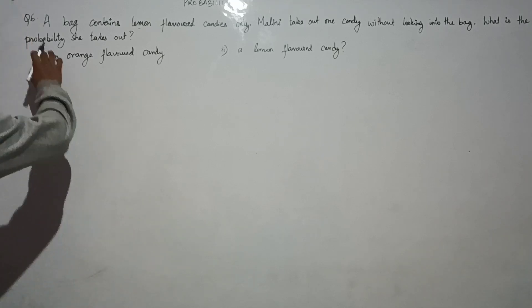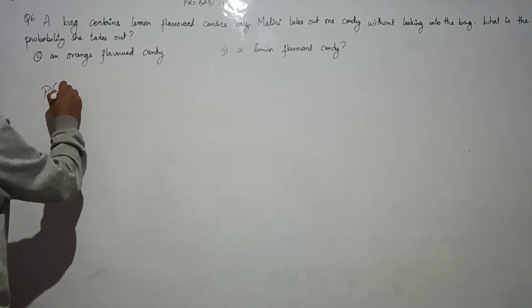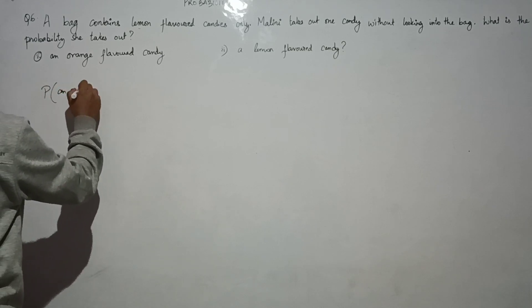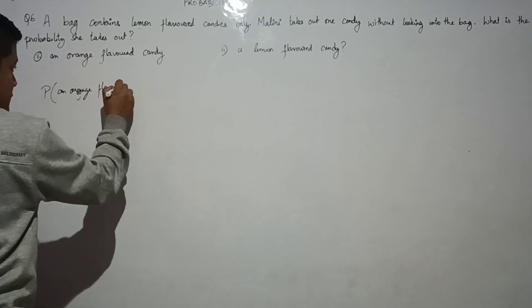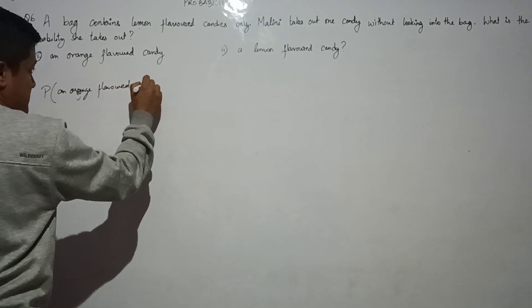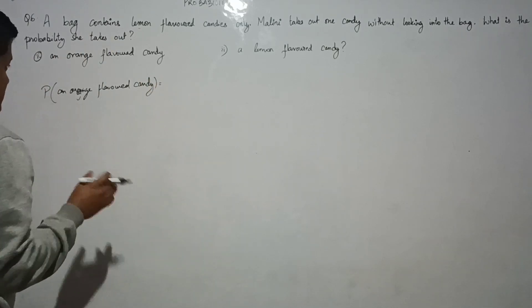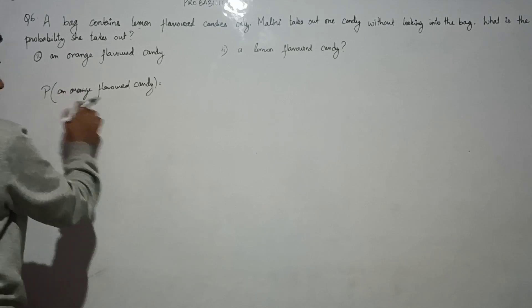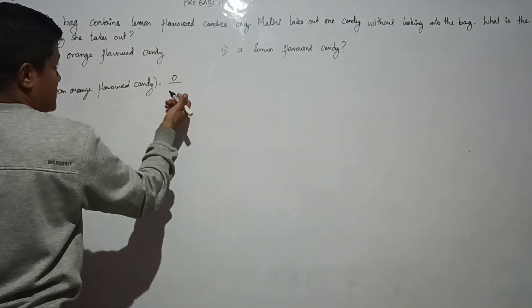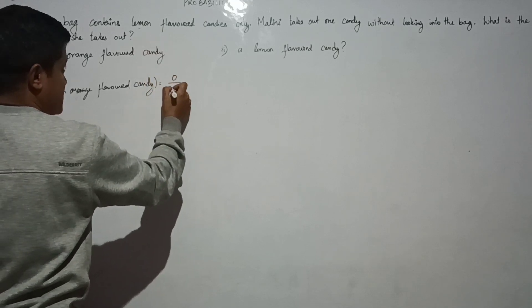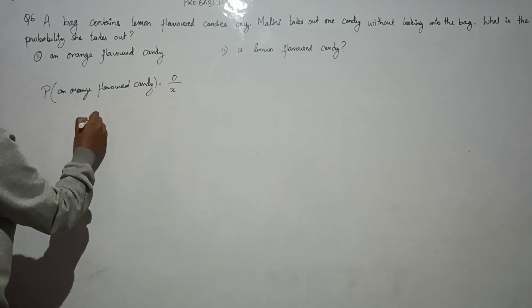What is the probability she takes out an orange flavored candy? The bag has no orange flavored candies, so zero by the total number. If the lemon candy count is X, then it equals zero.